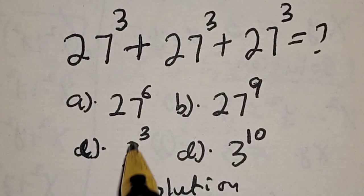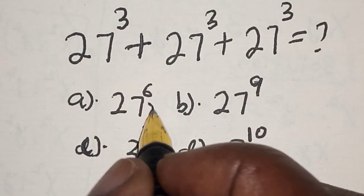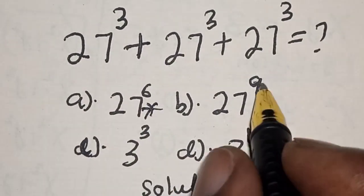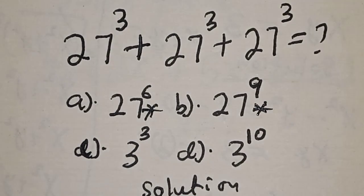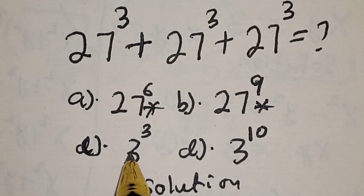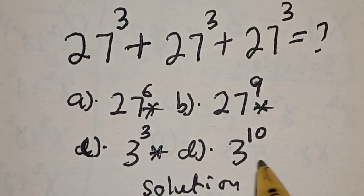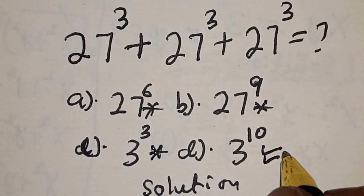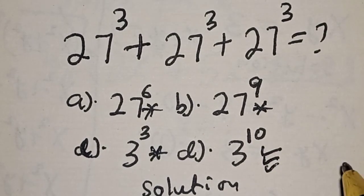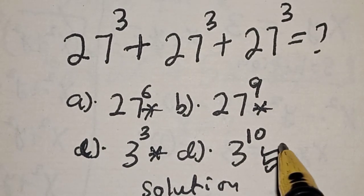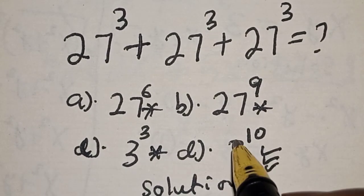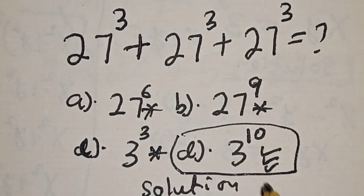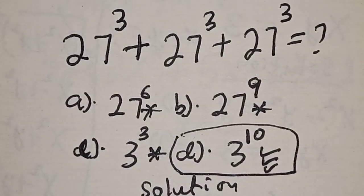Let's check the options: option A is 27 raised to power 6 — no; B is 27 raised to power 9 — no; C is 3 raised to power 3 — no; and D is 3 raised to power 10 — yes, that is our final answer. If you enjoyed the class, please don't forget to like, share, comment, and subscribe. Thank you!